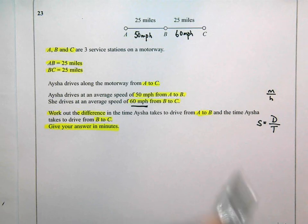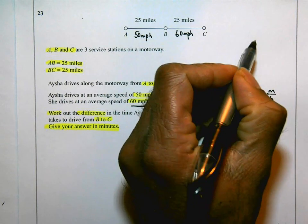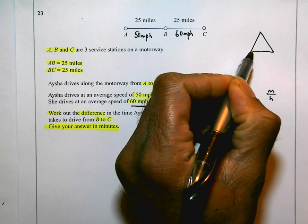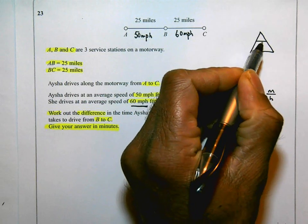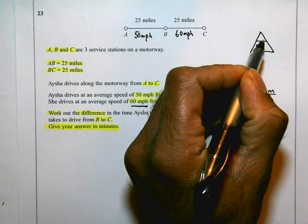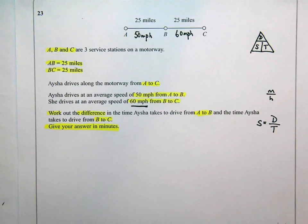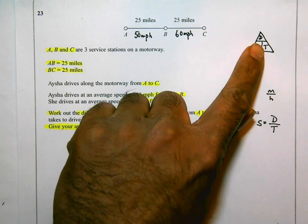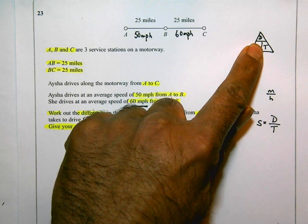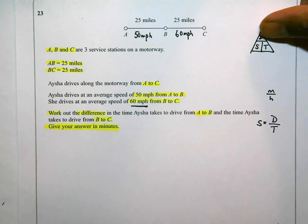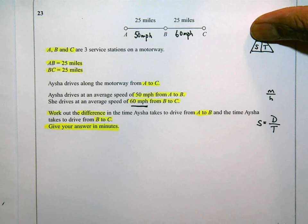From your science lessons, you should know the triangle with speed, distance, and time. Speed is distance over time, arranged in that triangle. You can cover up whichever quantity you want to find: cover up S to get speed equals distance over time; cover up D to get distance equals speed multiplied by time; and if you want time, you cover up T.